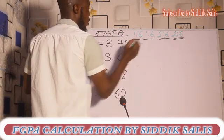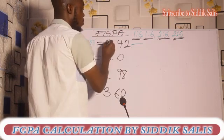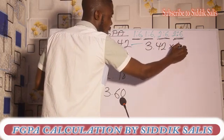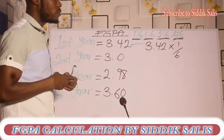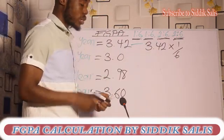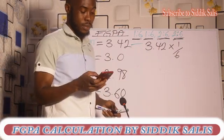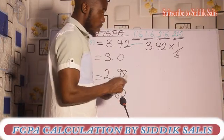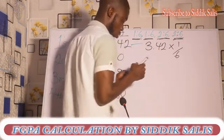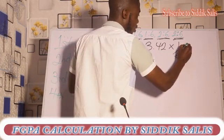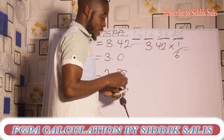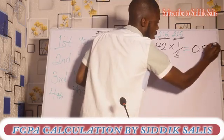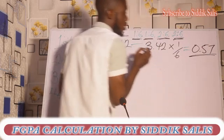So for the first year we have 3.1 — well, 3.42 — multiplied by one divided by six. Let's use our calculators. That gives us 0.57 for the first year. So 0.57 is what we have for the first year — keep this one.